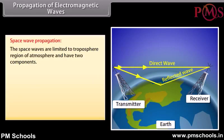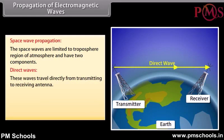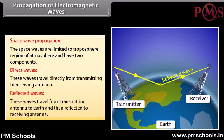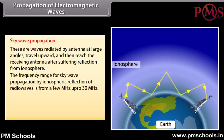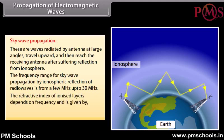Space wave propagation: Space waves are limited to the troposphere region of the atmosphere and have two components — direct waves, which travel directly from the transmitting to the receiving antenna, and reflected waves, which travel from the transmitting antenna to Earth and are then reflected to the receiving antenna. Sky wave propagation: These are waves radiated by an antenna at large angles; they travel upward and reach the receiving antenna after suffering reflection from the ionosphere. The frequency range for sky wave propagation is from a few MHz up to 30 MHz. The refractive index of ionized layers is given by: n = √(1 − 81/F²).